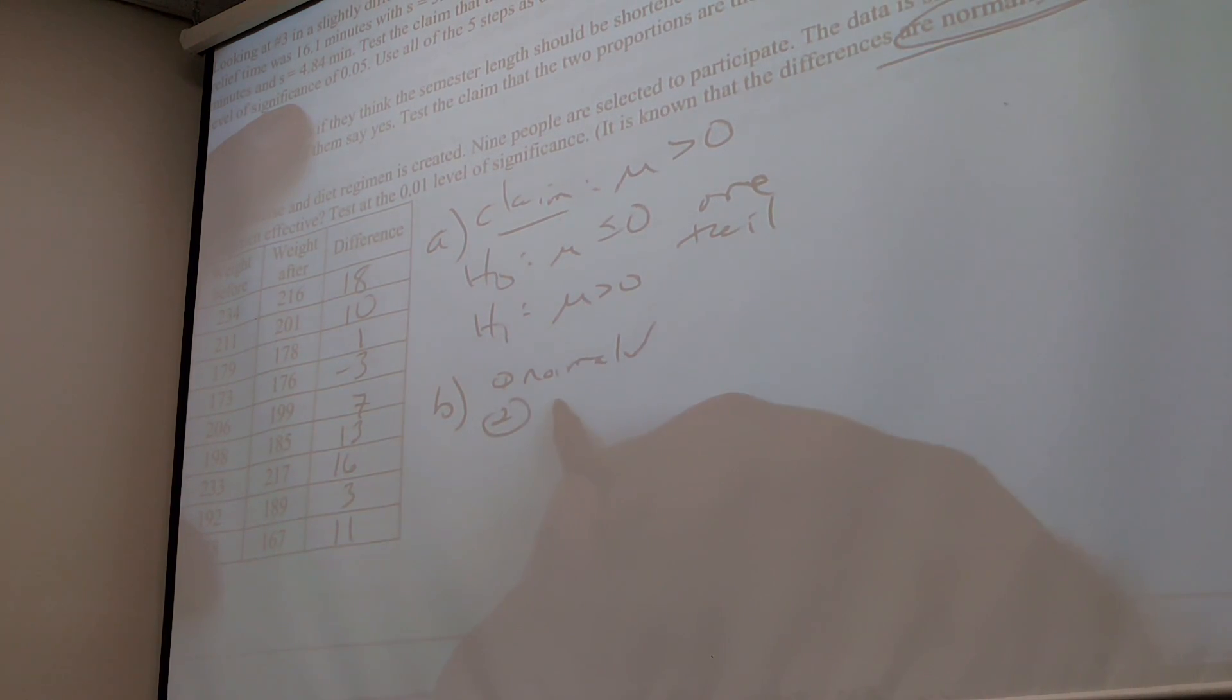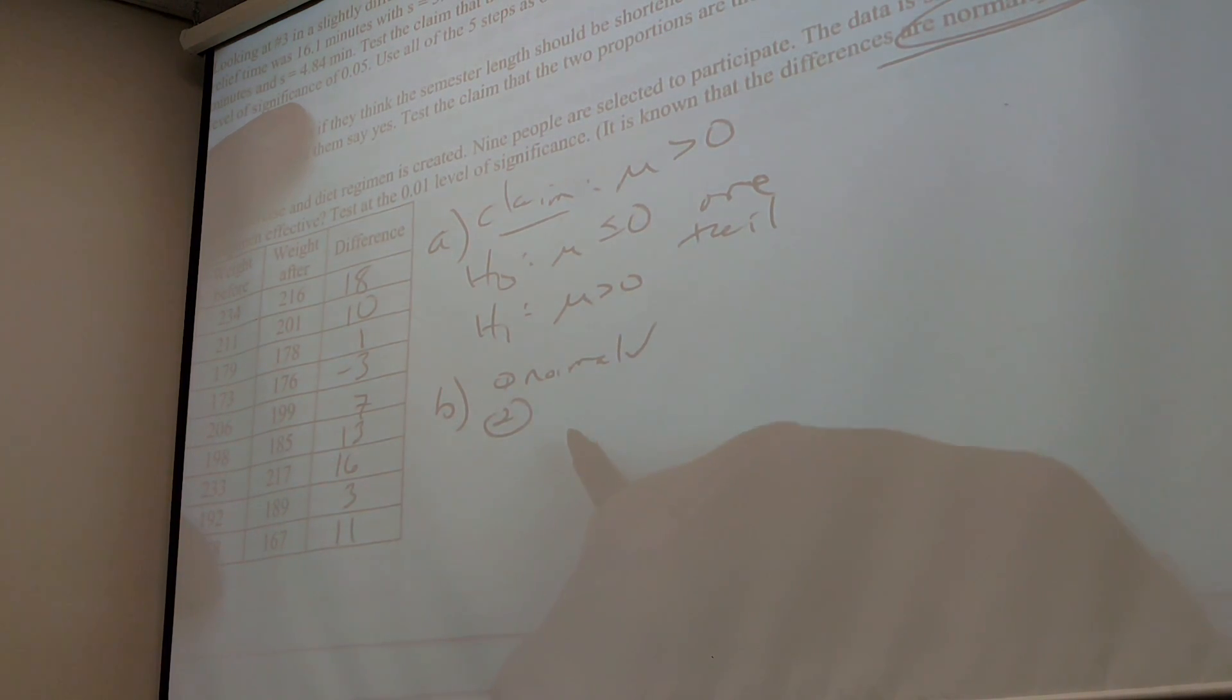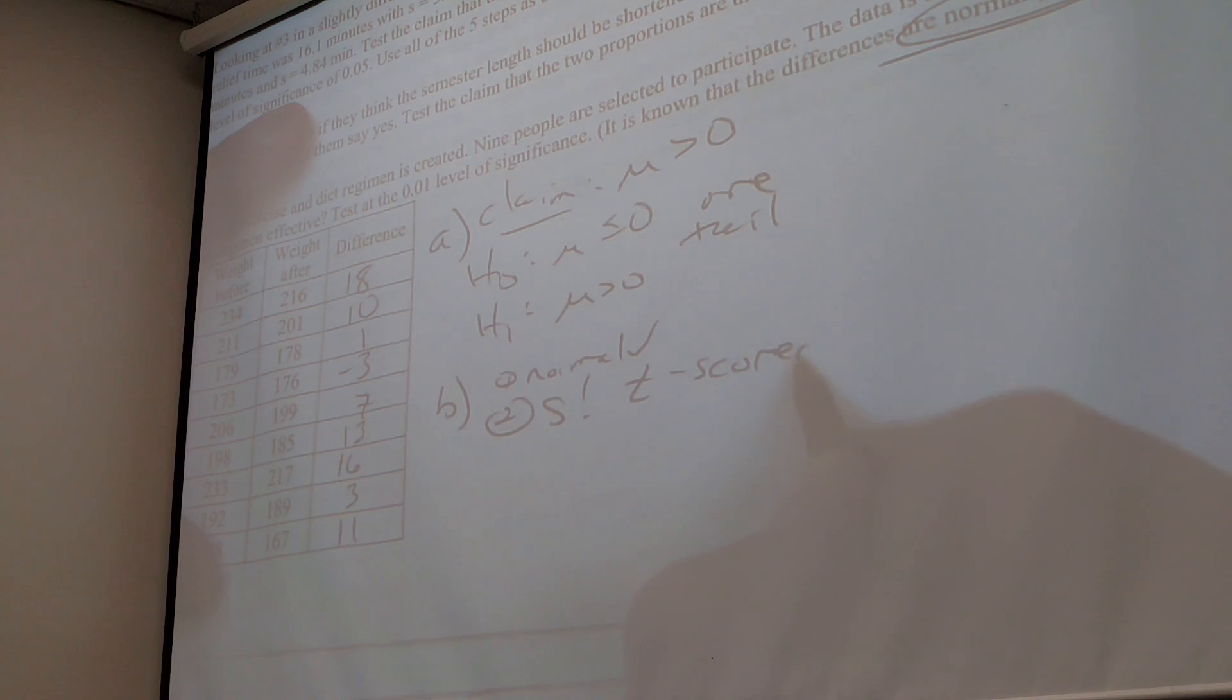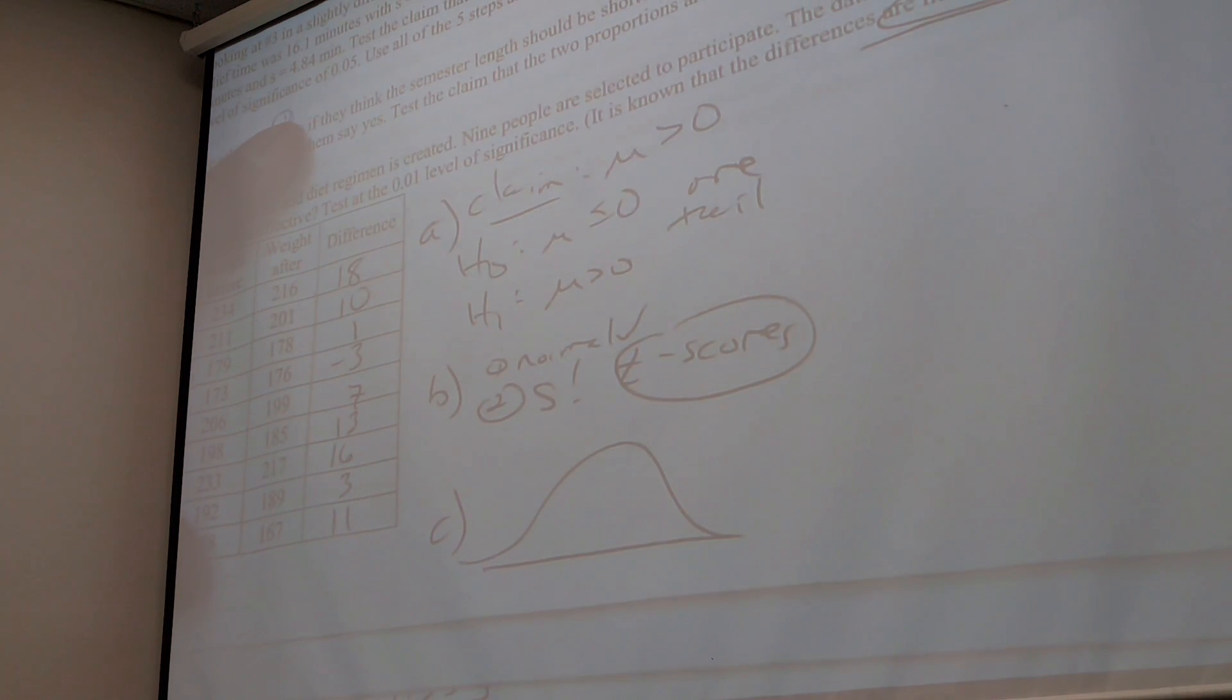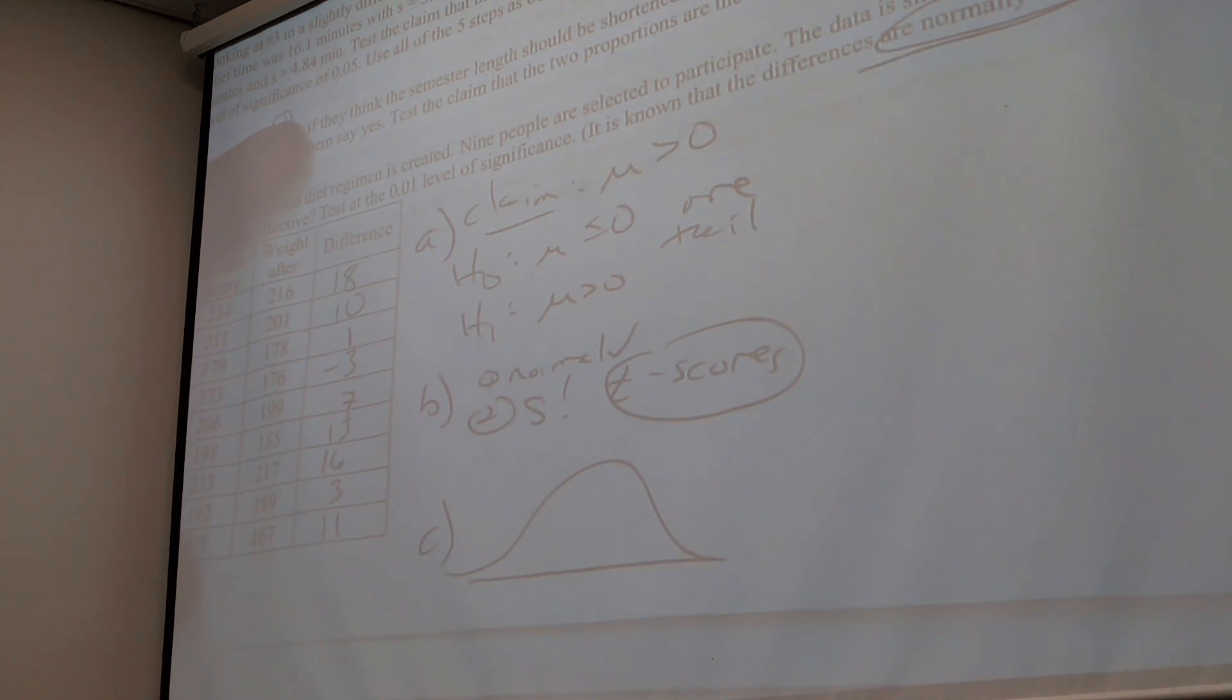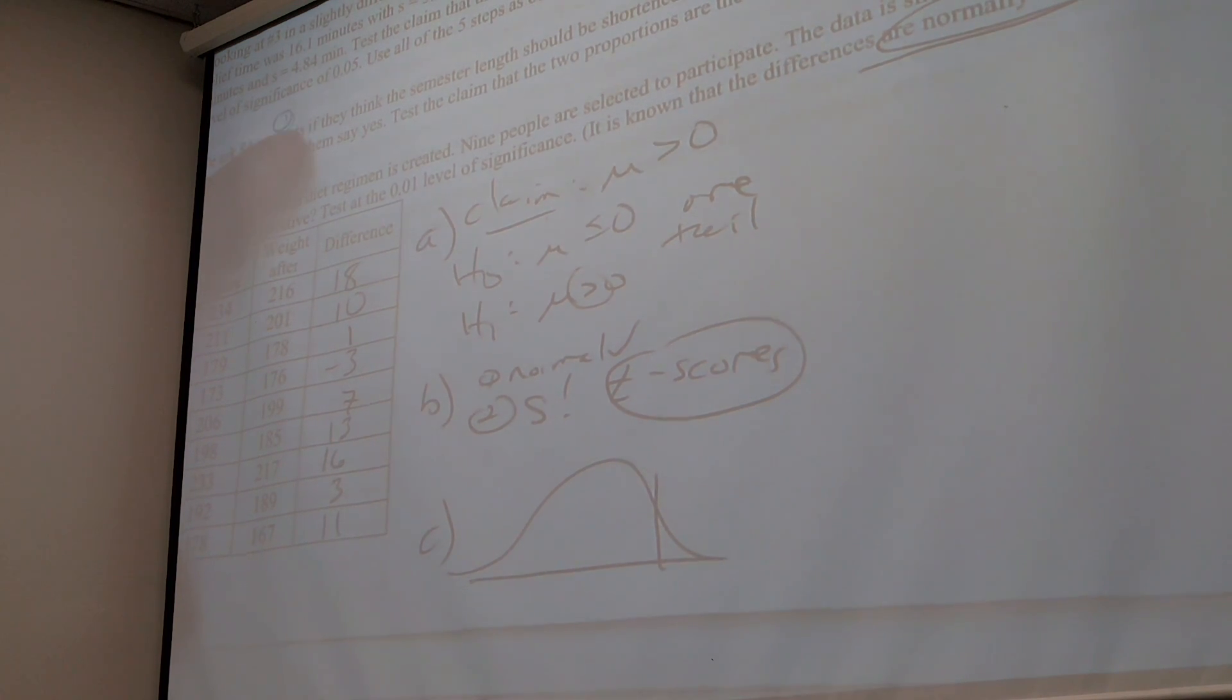Now step C is rejection region. Where's the rejection region going to be? What side? Up. Right. So what's my degrees of freedom? And here's where you've got to be a little careful. How many data points do I actually have? What did I say the data was? Yeah, I have nine data points. So my degrees of freedom is eight. I like it.